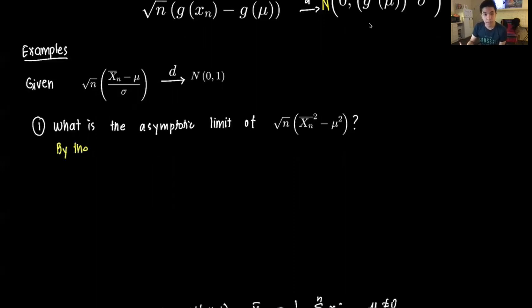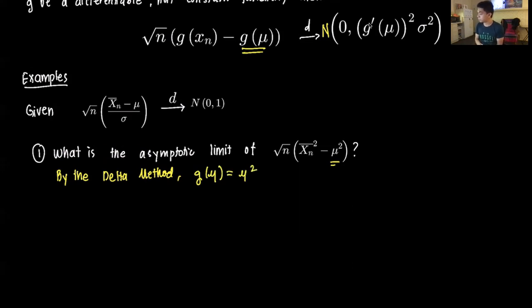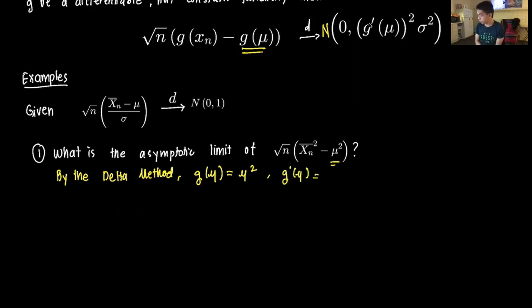By the delta method, we let g(μ) be equal to μ² — that's what we subtract — so g(μ) = μ². Taking the derivative, g′(μ) = 2μ.